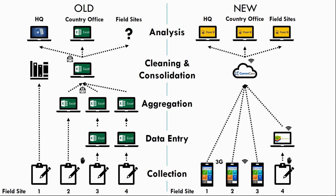Let's first look at the old way of doing things. In a typical example, we might have four different field sites all collecting data — either for a survey or routine monitoring — using pen and paper. When they hand over that data to the field offices, someone enters it into an Excel file. Then using this Excel file, the data is aggregated, usually into a separate Excel file, and sent via email to the country office. The country office then consolidates the data, does a bit of cleaning, and uses that data to do the analyses.